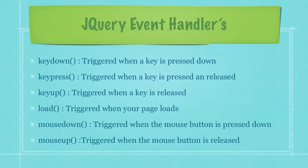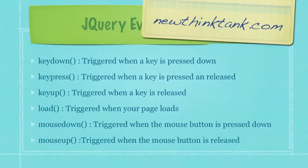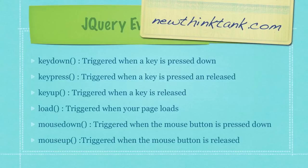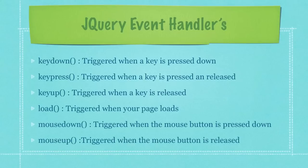Key down is triggered when a key is pressed down. Key press is triggered when a key is pressed and released — I'm talking about the keyboard here. Key up is triggered when a key is released. Load is triggered when your web page is fully loaded.